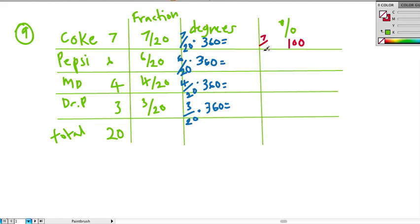So we would still use the same fraction that we have. We would still use 7 over 20, but this time we would times by 100. For the next one, we have 6 over 20, and we would times by 100. Next one, 4 over 20 times by 100. And finally, 3 over 20, 100.